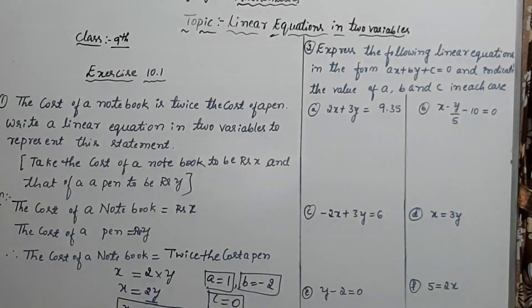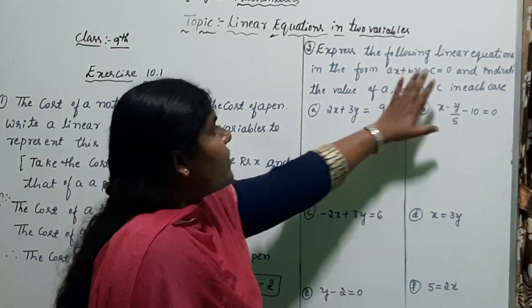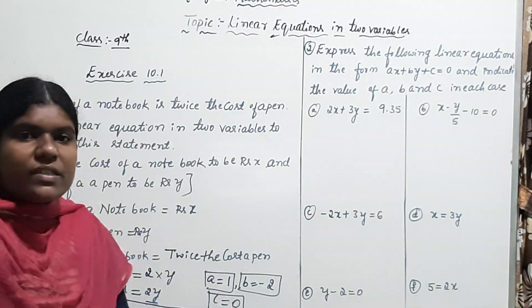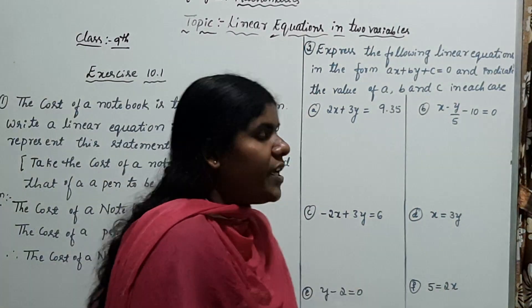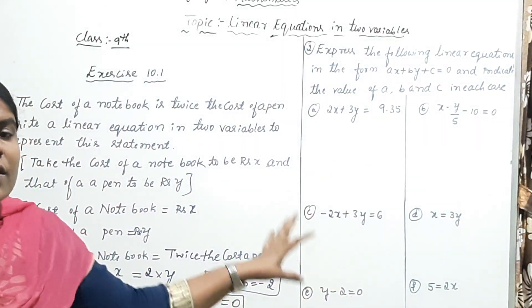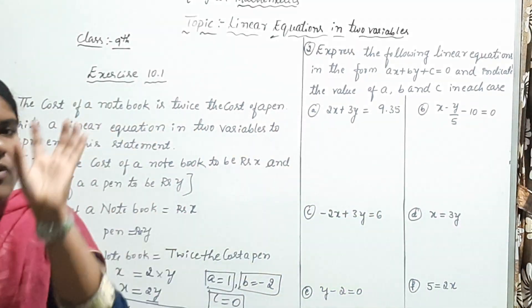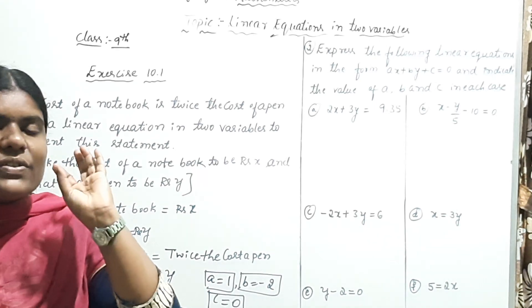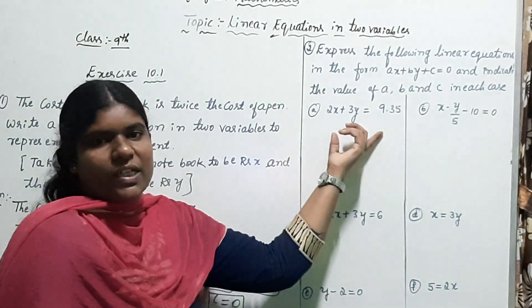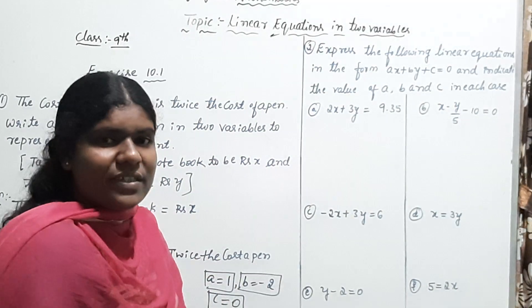Next, the second problem: express the following linear equations in the form AX + BY + C = 0 and indicate the values of A, B, and C for each. Here some algebraic expressions are given. The first expression is 2x + 3y = 9.35.